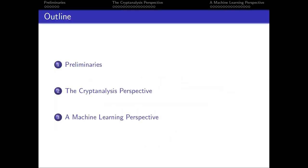This talk is divided into three main parts. The first part will be the preliminaries, where we will talk about the background work required to understand this presentation — in particular, a previous work in Crypto 2019 by Aaron Gohr. Next, we will explore the intuition of Gohr's neurodistinguishers from a cryptanalysis perspective. Lastly, we will focus on how we can mix a machine learning pipeline and traditional cryptanalysis to replace the neurodistinguishers.